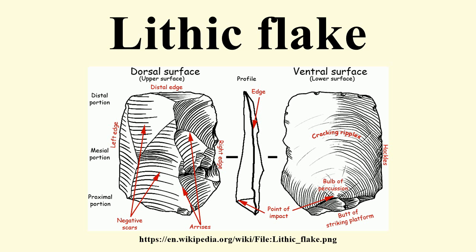There are numerous specialized types of blade flakes. Channel flakes are characteristic flakes caused by the fluting of certain Paleo-Indian projectile points. Such fluting produces grooves in the projectile points which may have facilitated hafting. Prismatic blades are long, narrow specialized blades with parallel margins which may be removed from polyhedral blade cores.